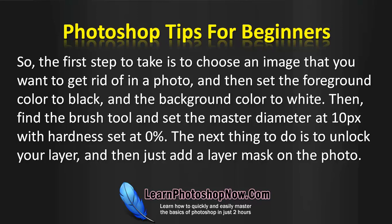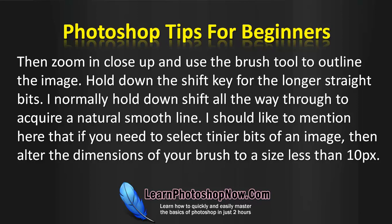The next thing to do is to unlock your layer and then add a layer mask on the photo. Then zoom in close up and use the brush tool to outline the image. Hold down the Shift key for the longer straight bits — I normally hold down Shift all the way through to acquire a natural smooth line.